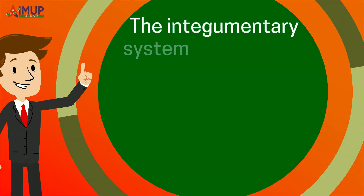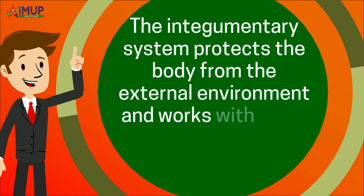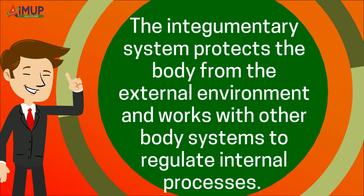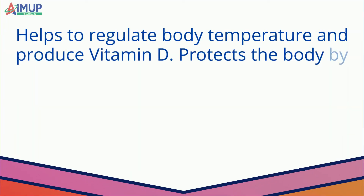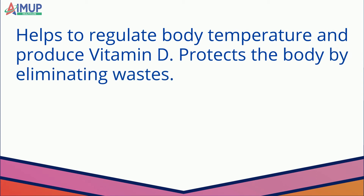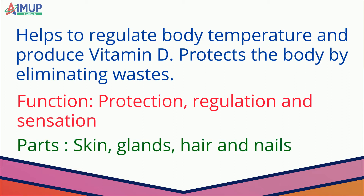The integumentary system protects the body from the external environment and works with other body systems to regulate internal processes. It helps to regulate body temperature, produce vitamin D, and protect the body by eliminating wastes. Functions include protection, regulation, and sensation. Parts include skin, glands, hair, and nails.